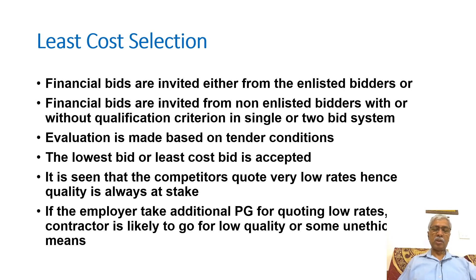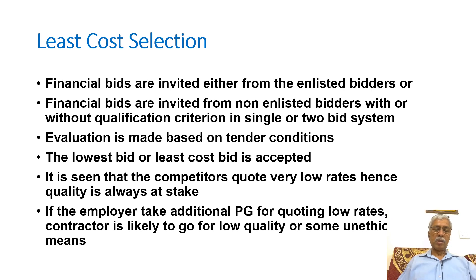In the two-envelope system, the first envelope contains the technical bid and the second envelope contains the financial bid. Only the bids that qualify technically have their financial bids opened, and whichever is the lowest bid is accepted. Evaluation is based on current conditions in the two-bid system, and ultimately the lowest or least cost bid is accepted.